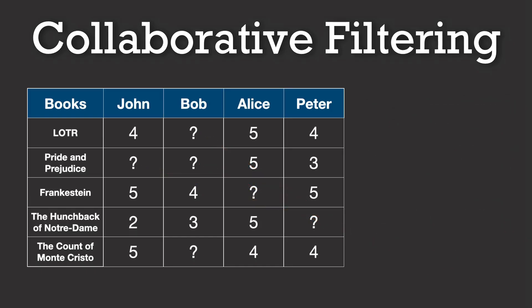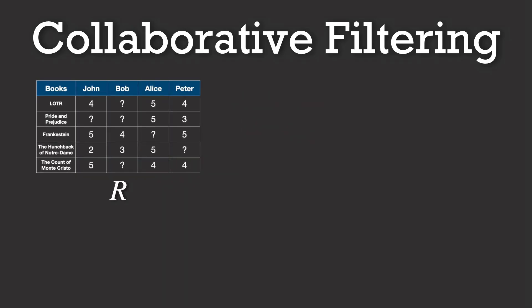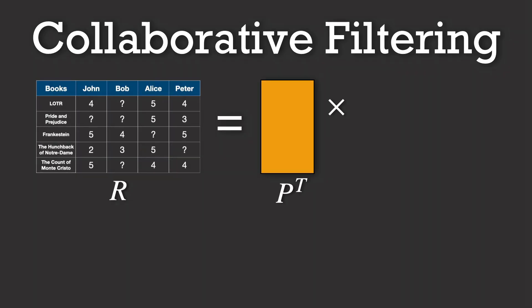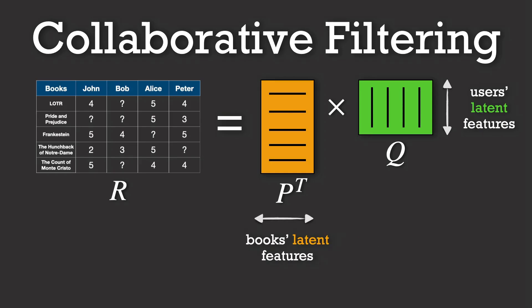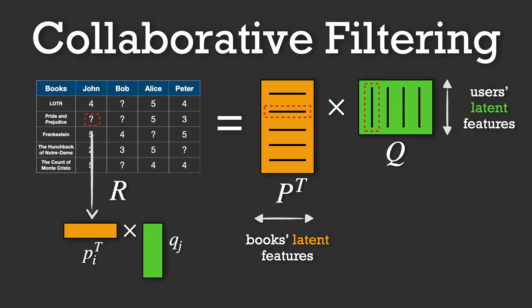A more advanced approach in collaborative filtering is based on matrix factorization. Here, we assume that the large user-item matrix can be approximated by the product of two smaller matrices. Each user is associated with a latent feature vector in the matrix Q, and each item is similarly represented by its own latent feature vector in the matrix P. The predicted rating for a user on an item is given by the dot product of those two vectors. If we denote the latent vector for user i as pi and for item j as qj, then the prediction is simply pi transpose multiplied by qj.